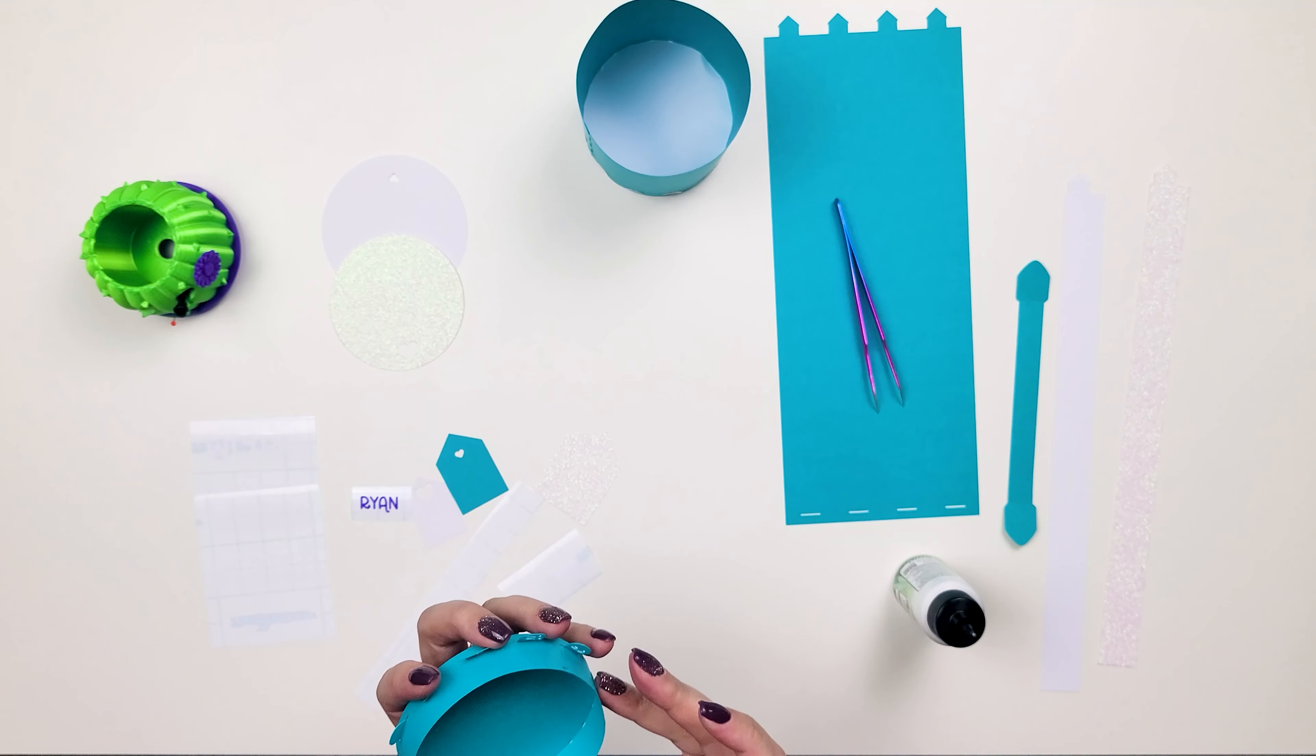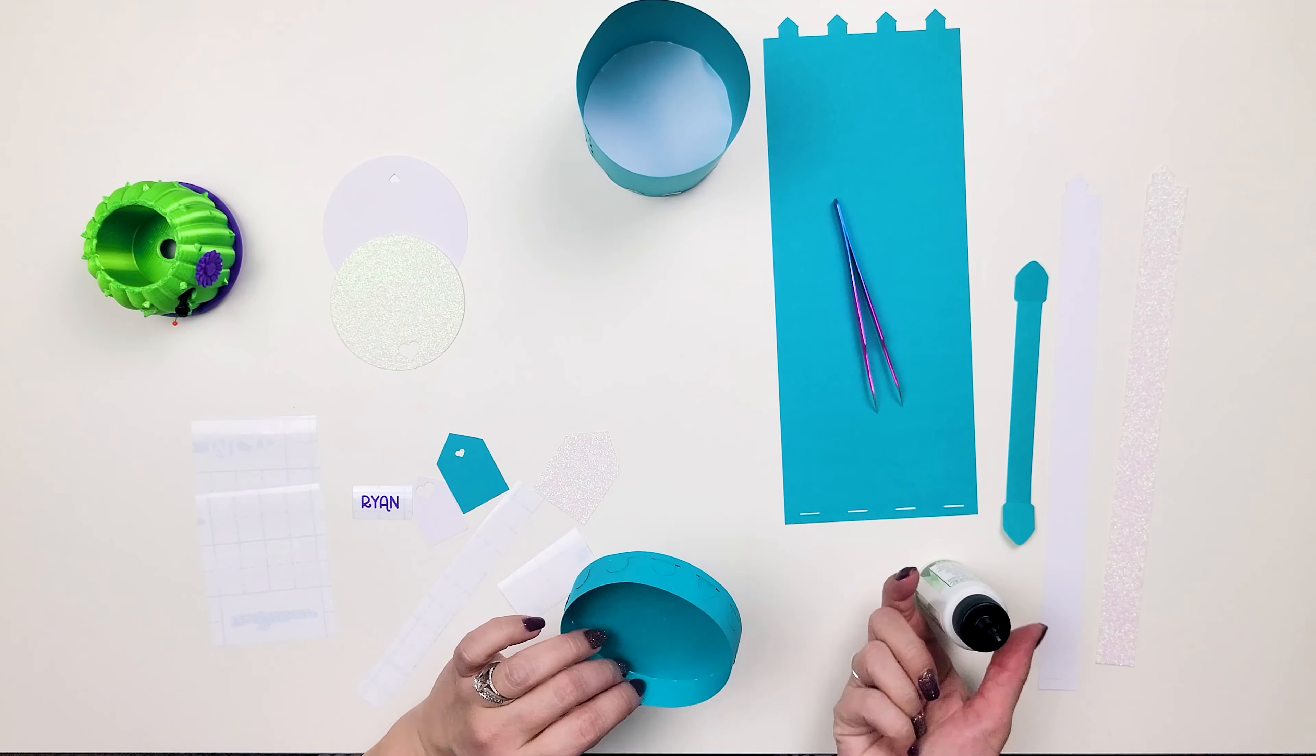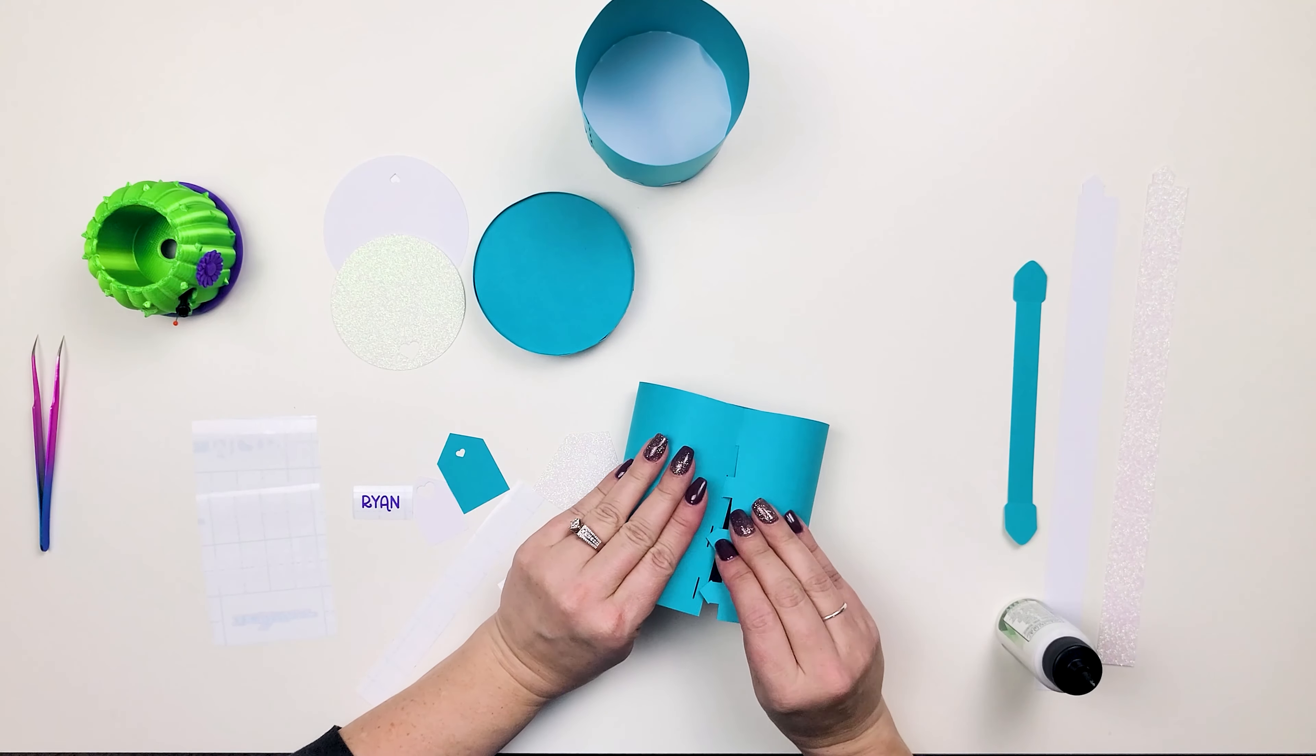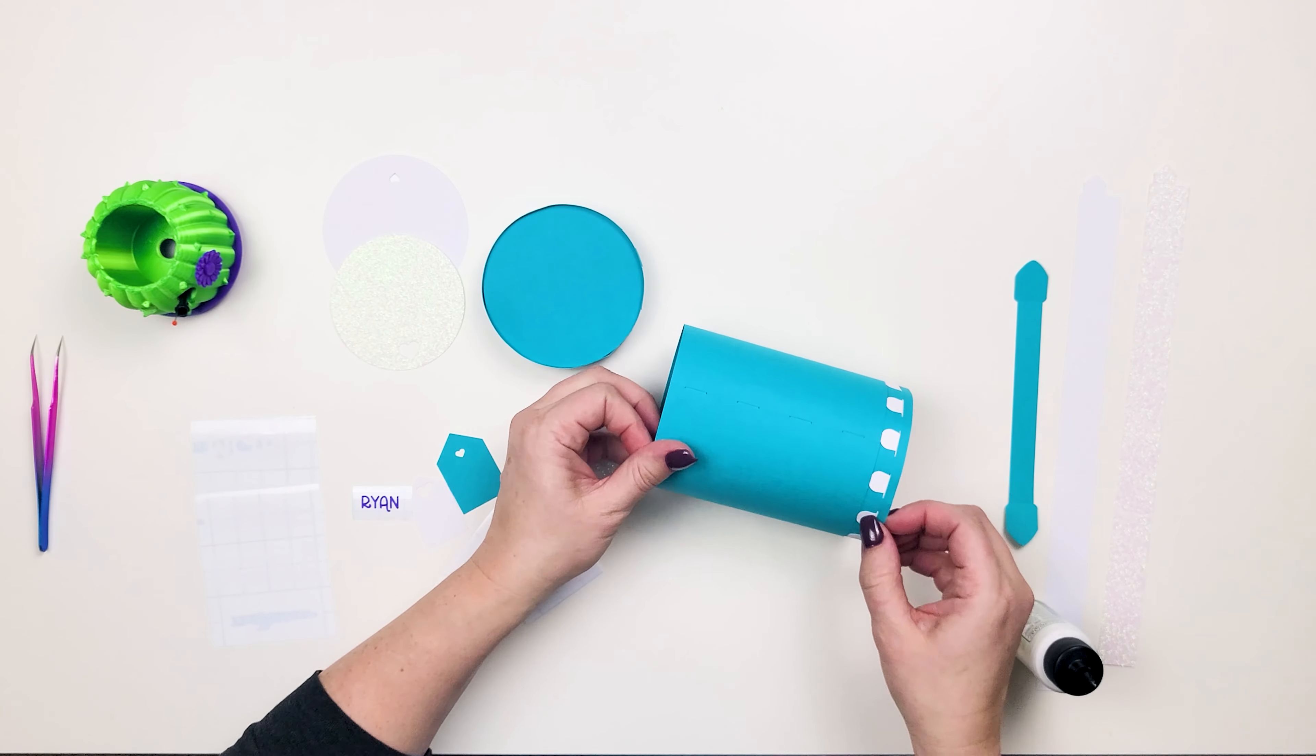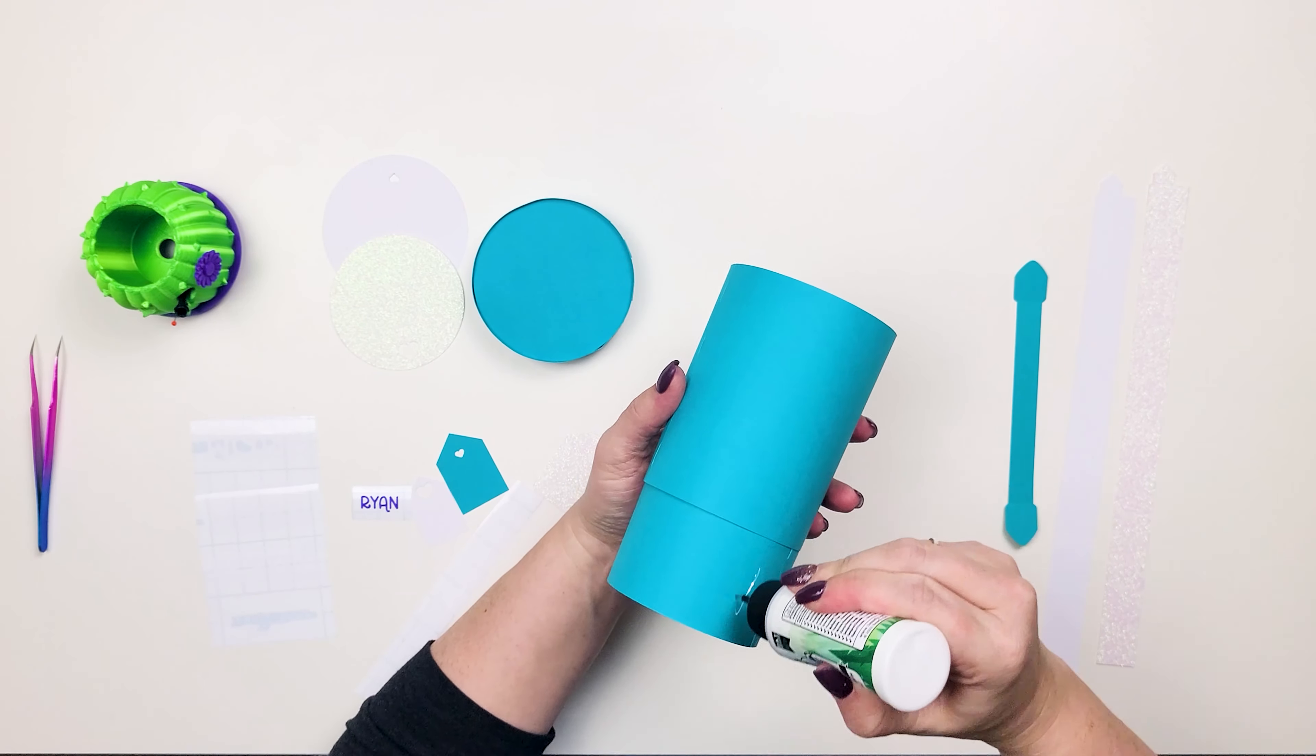If you are interested in this design I found it in Cricut Design Space. Okay now I am putting the outside layer of the cup around that inner part that I did. What this does is it hides those tabs from the bottom and gives it a thicker sturdier foundation.